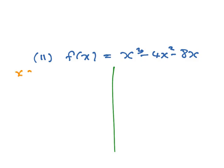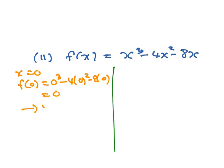When x equals 0, f(0) equals 0 cubed minus 4 times 0 squared minus 8 times 0, which is 0. So it intersects the y axis at 0.